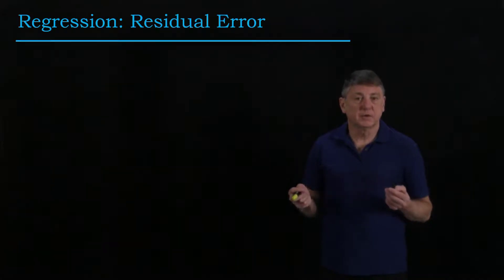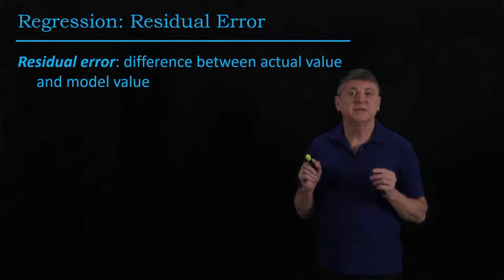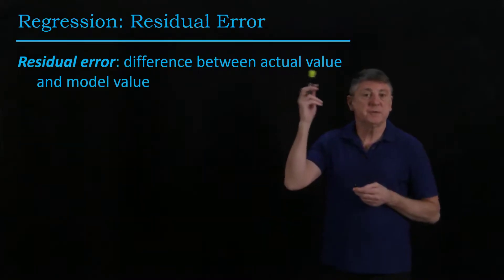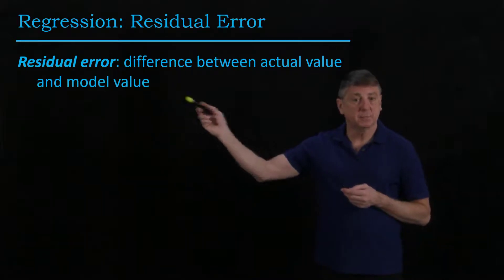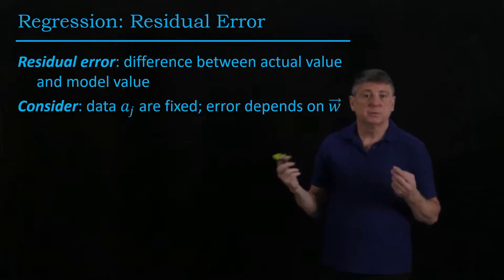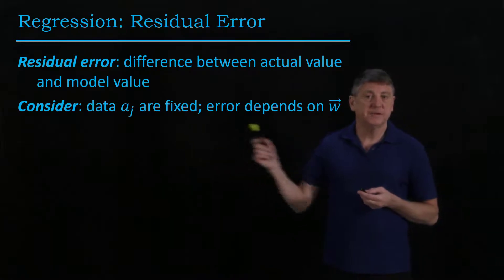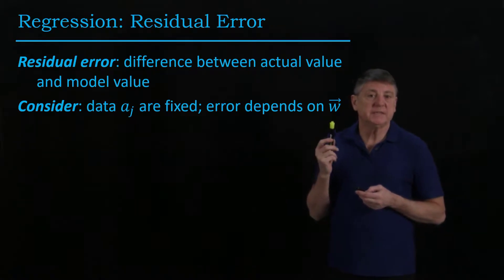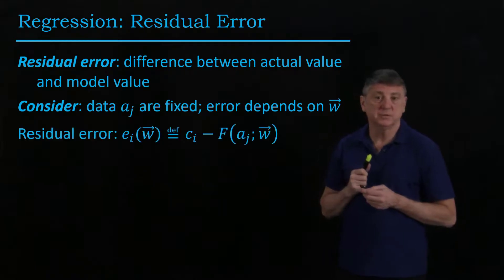A critical part of understanding regression is the residual error. And this is very simply the difference between the actual value and the model value. So suppose that we have data that are fixed. And what that means is that the error will depend on the weight parameters that we use in our model.